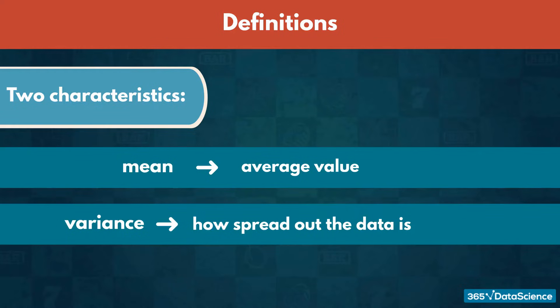We denote the mean of a distribution with the Greek letter mu, and its variance with sigma squared.